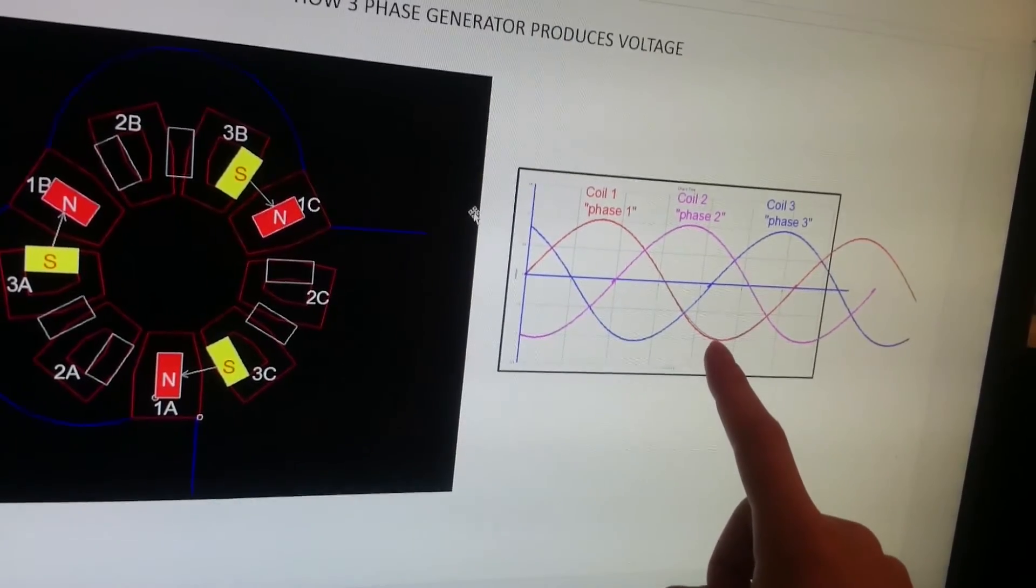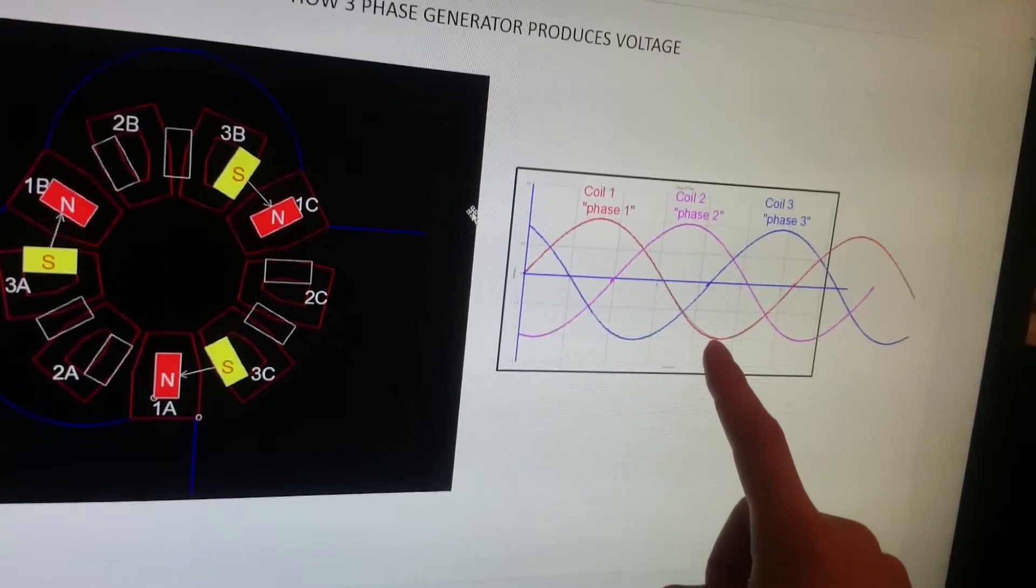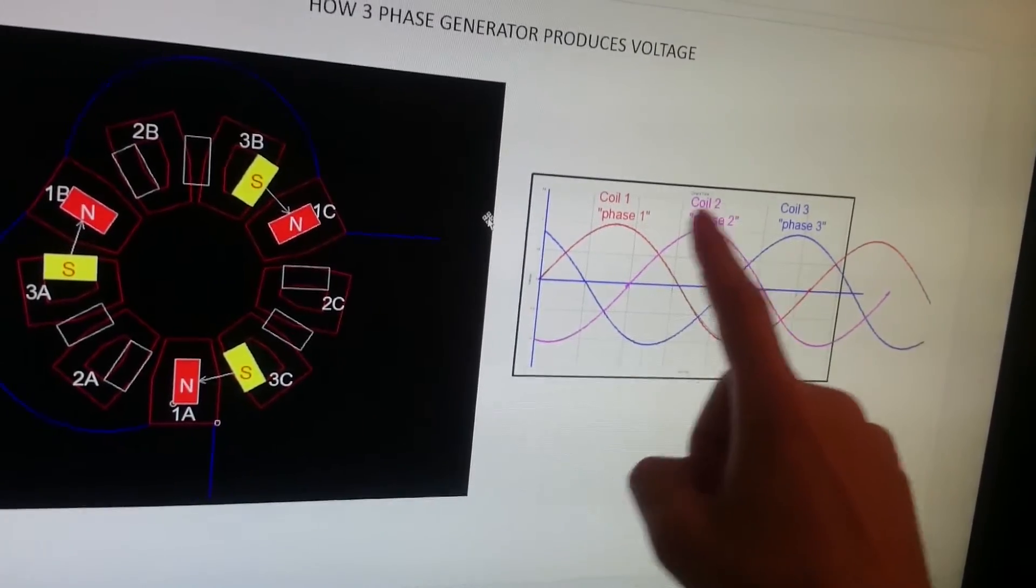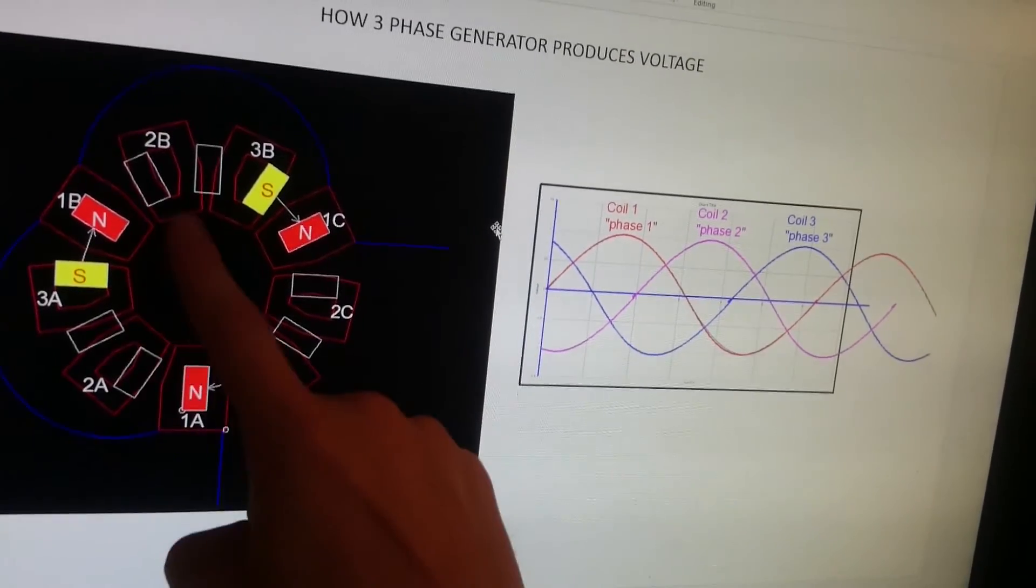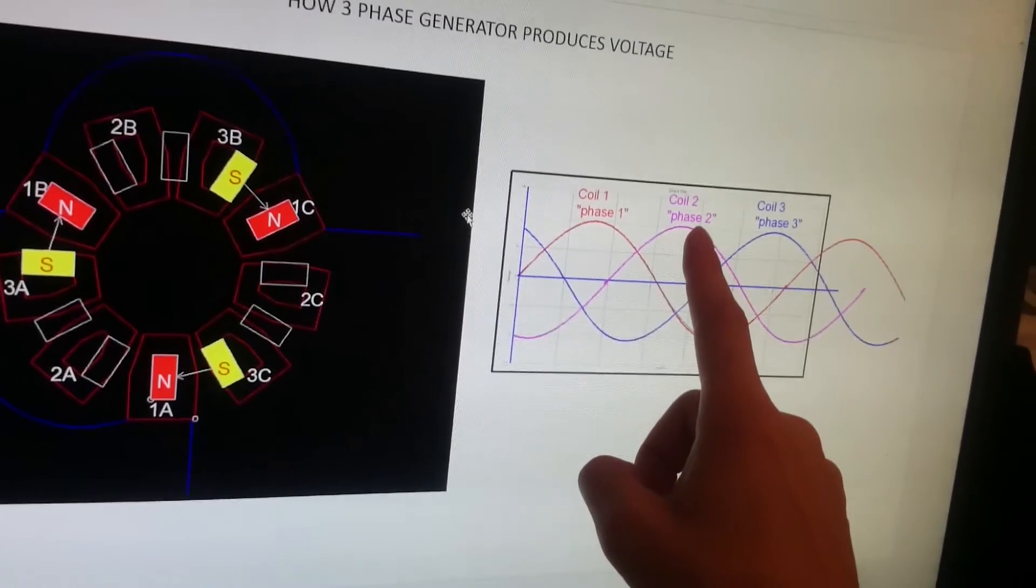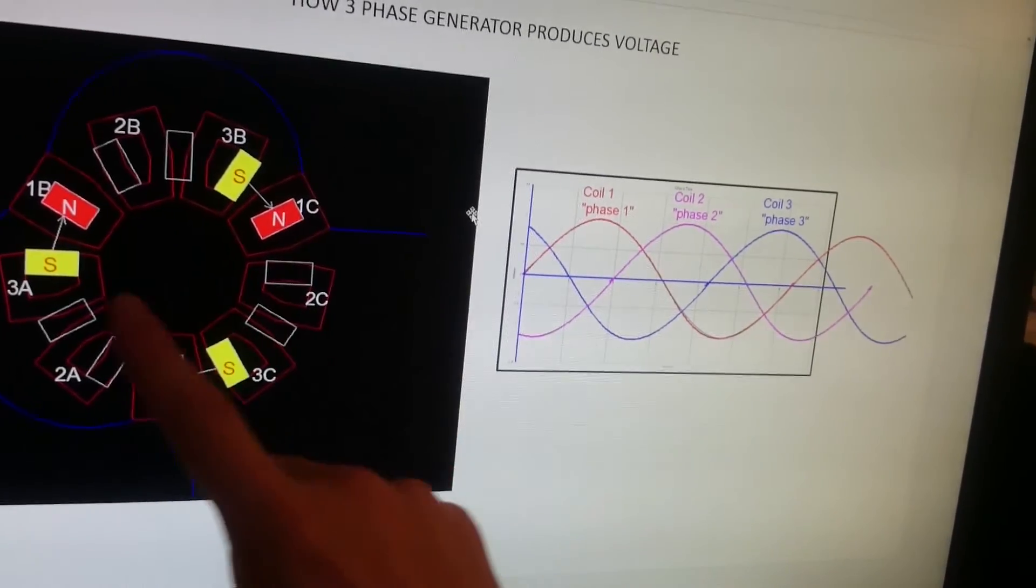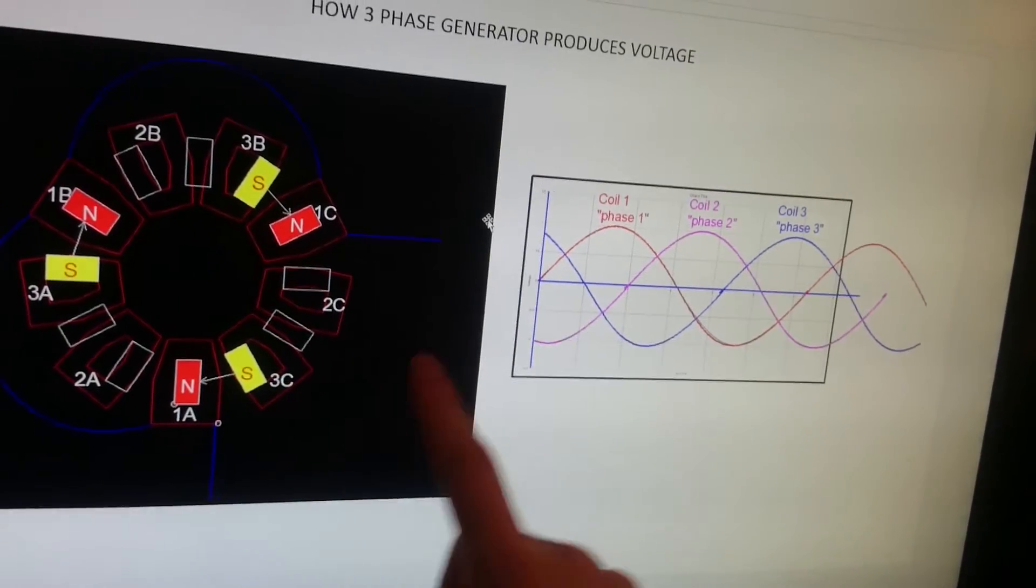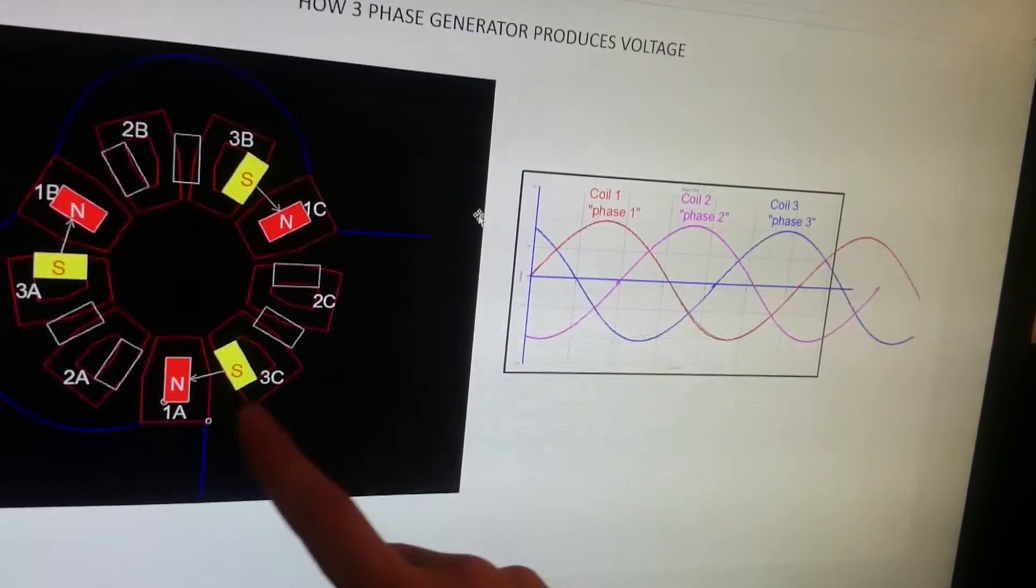The same principle applies to coil 2—2A, 2B, 2C or Phase 2—and coil 3 or Phase 3, which is 3A, 3B, 3C.